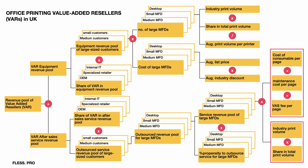Here's another example of a decision tree — a blueprint for the model of the UK office printers value-added resellers market that I developed some time ago at McKinsey. Same logic: I decompose the complex subject into several layers of simpler elements. Each element is estimated separately. Then I aggregate the elements into the initial subject and get the desired result.